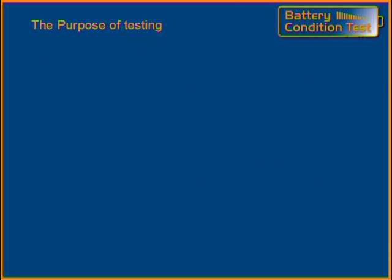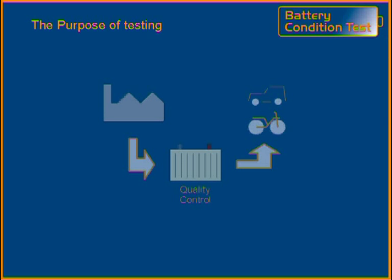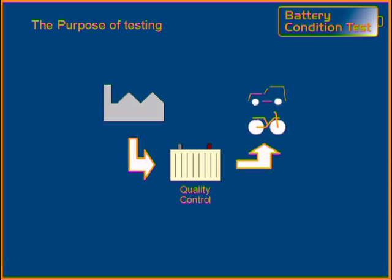There are many reasons that batteries may not perform according to their specifications. Before a battery is used in an application, like an e-car or an e-bike, it is best to measure the actual capacity first. In that way, a customer will know that the battery was good upon delivery. If there are battery problems later on, the initial measurement is a good reference. This is part of a quality assurance procedure and will reduce customer warranty claims and improve customer satisfaction.